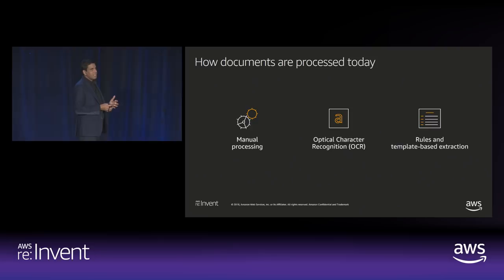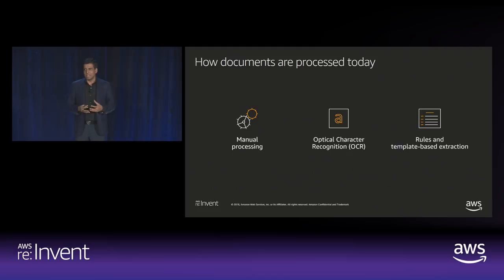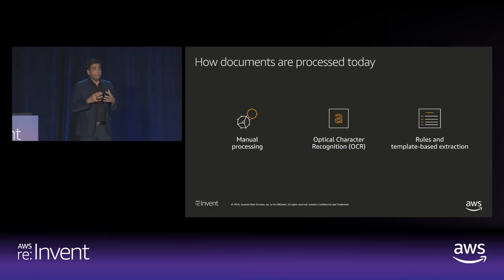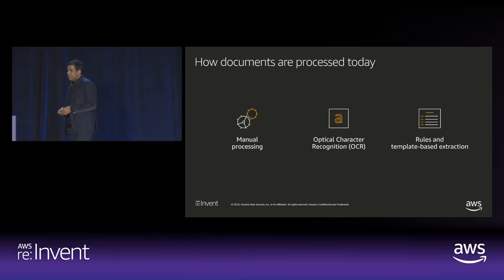There are processes people use to process documents today. We found largely three solutions, and in the most sophisticated cases all three are applied simultaneously. First is the human being — we look at a document, key in all the values into an application, and hit save. That's manual processing. Then there's OCR, optical character recognition, to extract text. And some people enhance the combination with templates that understand document layout and structure to extract more information.